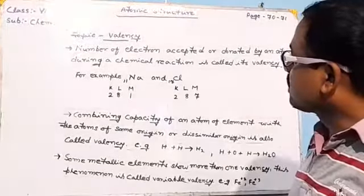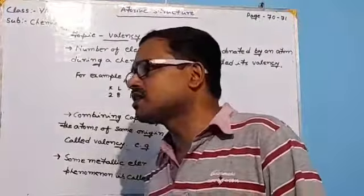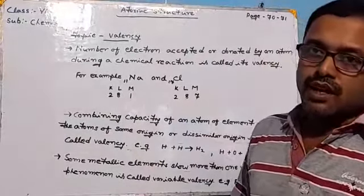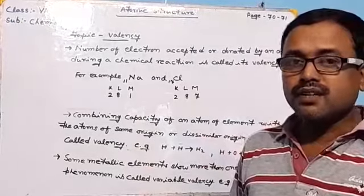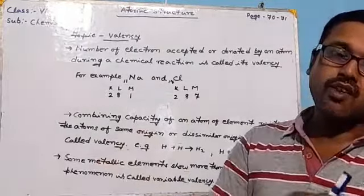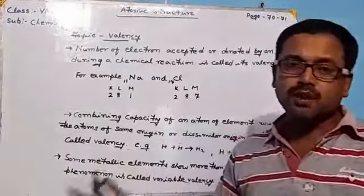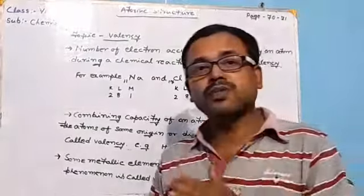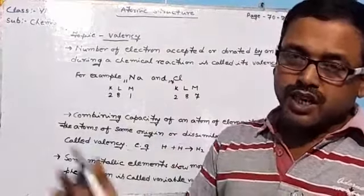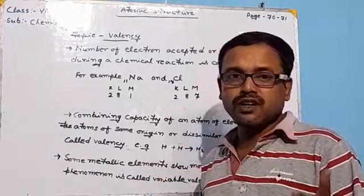Another term to discuss is variable valency. There are some metallic elements that show more than one valency. This phenomenon is called variable valency, because metals are capable of losing electrons from their inner orbits as well. Normally elements lose electrons from their last shell, but some metals can also lose electrons from inner orbits under certain conditions, causing them to exhibit more than one valency.